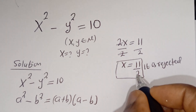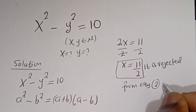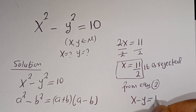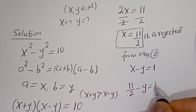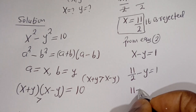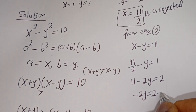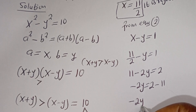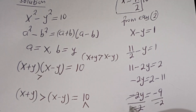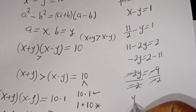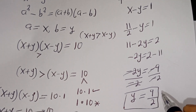Now let's solve for Y using equation 2: X minus Y is equal to 1. When X is 11 over 2, we have 11 over 2 minus Y is equal to 1. Multiplying through by 2: 11 minus 2Y is equal to 2. Then minus 2Y is equal to 2 minus 11, so minus 2Y is equal to minus 9. Dividing both sides by minus 2, Y is equal to 9 over 2. This is not a natural number either, so it is rejected.